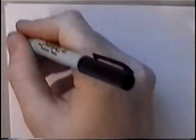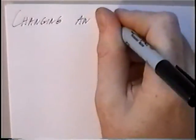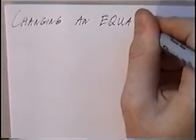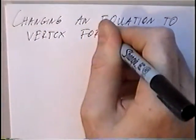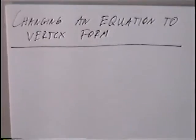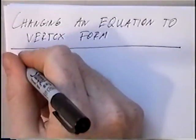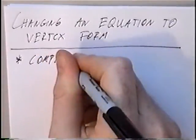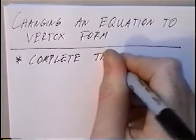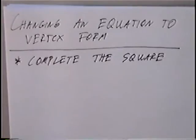The title of the last section is 'Changing an Equation to Vertex Form.' In this section we'll take a quadratic equation and rewrite it in vertex form. The method to do that is to complete the square. By completing the square we'll be able to change an equation into vertex form.